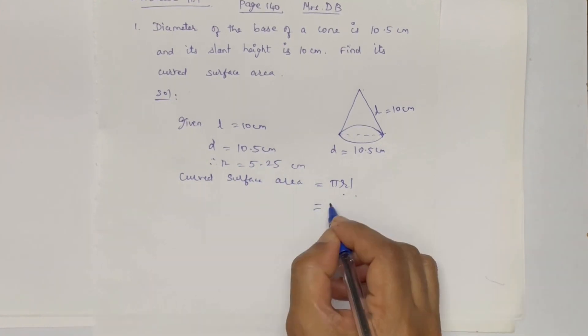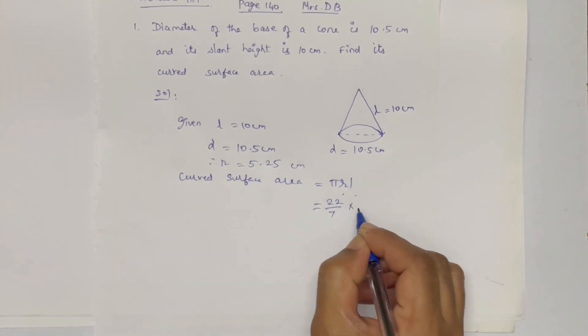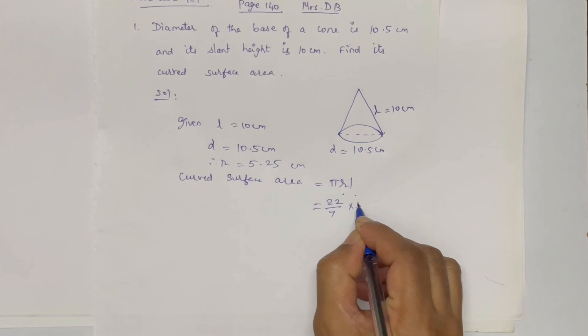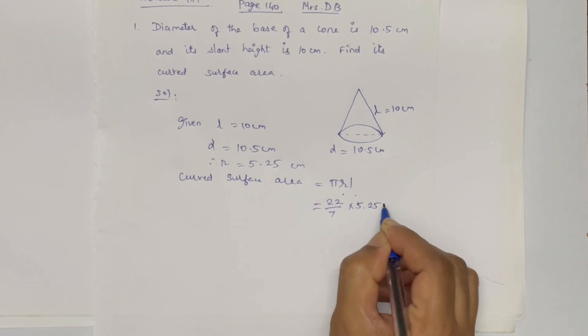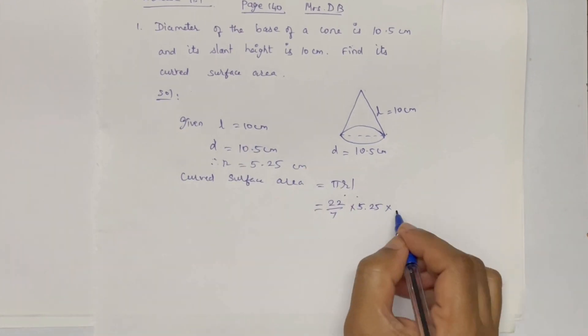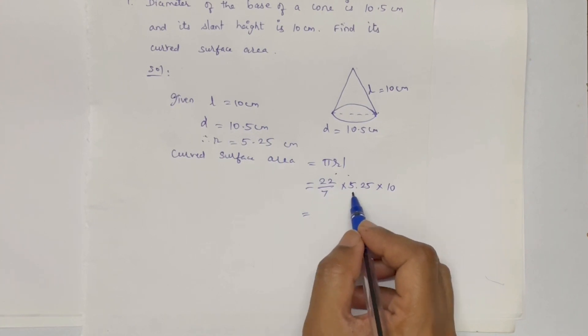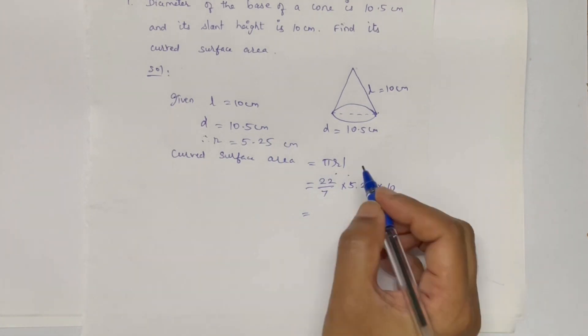Substituting: π = 22/7, r = 5.25, l = 10 cm. Calculating: 75 times 7 is 525.